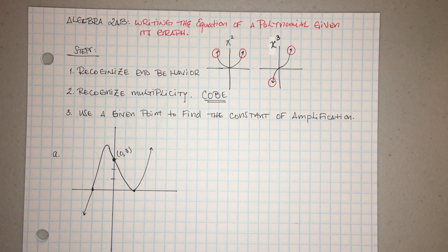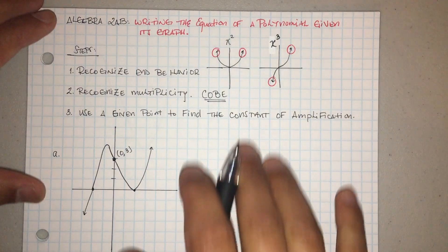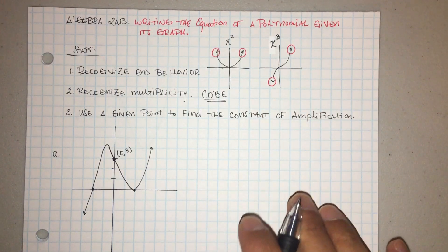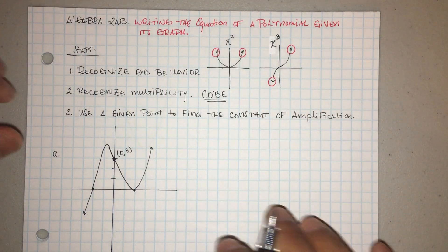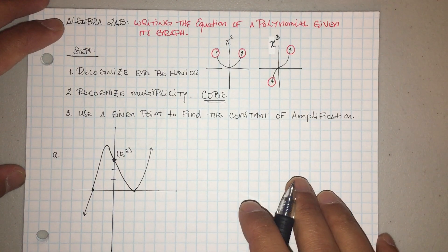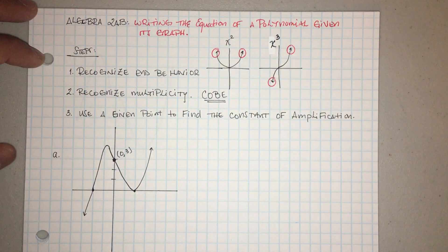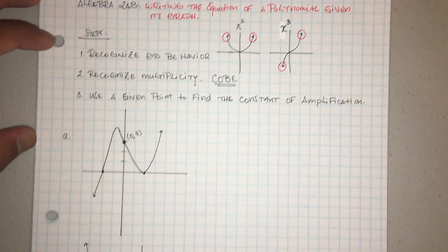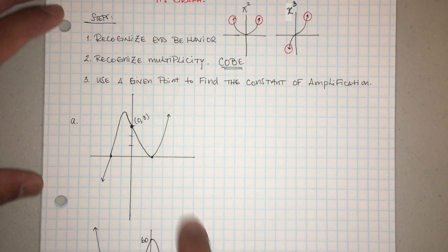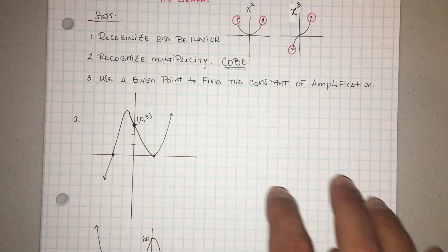Hey guys, in this video we're gonna go ahead and talk about writing the equation of a polynomial given its graph. So we've talked about how to graph it; in fact, now we're gonna go ahead and kind of work backwards. When you're doing these, they're gonna give you a graph like this. So how do we write the polynomial?